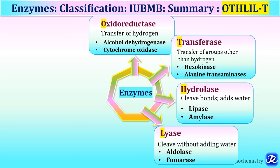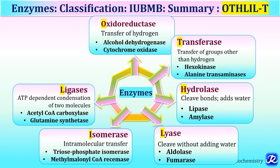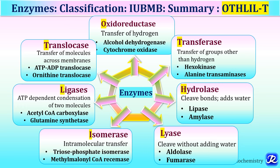EC4 lyases cleave bonds without addition of water — examples: aldolase, fumarase. EC5 isomerases are involved in intramolecular transfer — examples: triosephosphate isomerase, methylmalonyl-CoA racemase. EC6 ligases catalyze ATP-dependent condensation of two molecules — examples: acetyl-CoA carboxylase, glutamine synthetase, DNA ligase. EC7 translocases transfer molecules or ions across membranes — examples: ATP-ADP translocase, ornithine translocase.